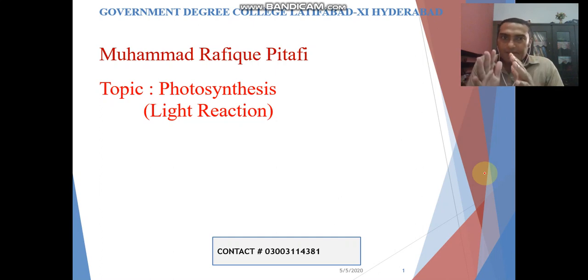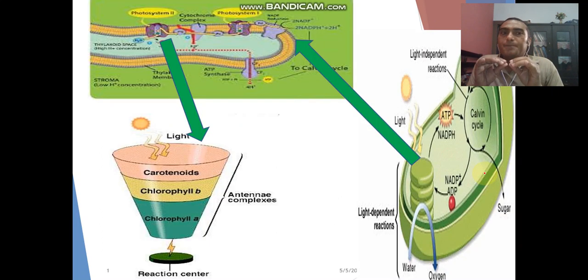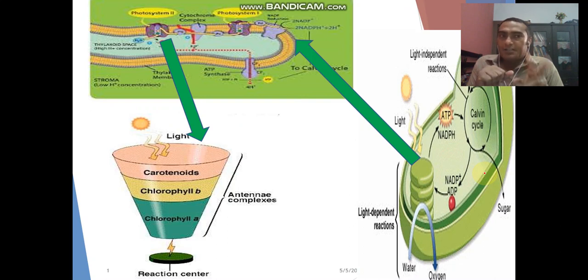Now we will see that there are two steps of photosynthesis. One is the light reaction and the other is the dark reaction.